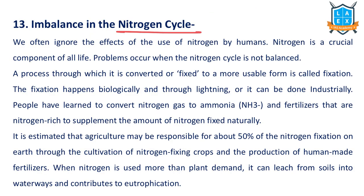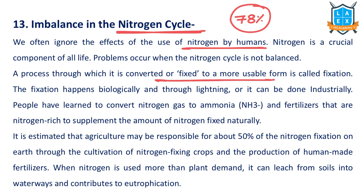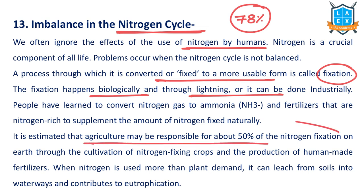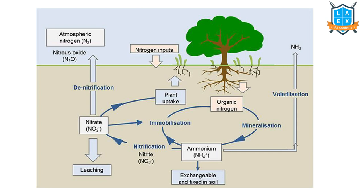The next issue is imbalance in the nitrogen cycle. Nitrogen constitutes 78% of our atmosphere. If the nitrogen cycle is not balanced, it leads to problems. Nitrogen fixation converts gaseous nitrogen to organic form in the soil, happening biologically or through lightning and other natural processes. The agriculture sector is responsible for 50% of nitrogen fixation. If nitrogen is used more than required — as we are increasingly using nitrogen fertilizers — it leads to imbalance in the atmosphere.